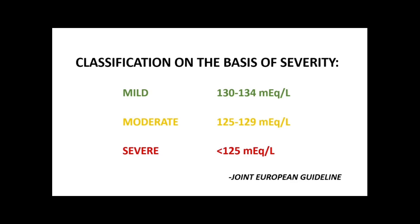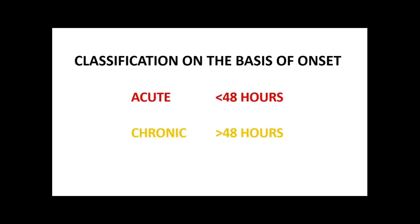Let's classify hyponatremia on the basis of severity. According to the joint European guideline, hyponatremia on the basis of severity can be classified as mild, moderate, and severe. In mild hyponatremia the serum sodium ranges from 130 to 134, in moderate 125 to 129, and in severe less than 125 milliequivalents per liter.